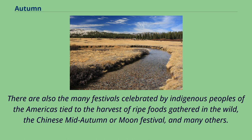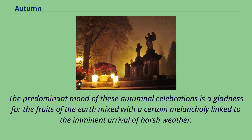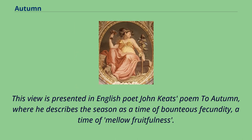There are also the many festivals celebrated by indigenous peoples of the Americas tied to the harvest of ripe foods gathered in the wild, the Chinese Mid-Autumn or Moon Festival, and many others. The predominant mood of these autumnal celebrations is a gladness for the fruits of the earth mixed with a certain melancholy linked to the imminent arrival of harsh weather. This view is presented in English poet John Keats' poem To Autumn, where he describes the season as a time of bounteous fecundity, a time of mellow fruitfulness.